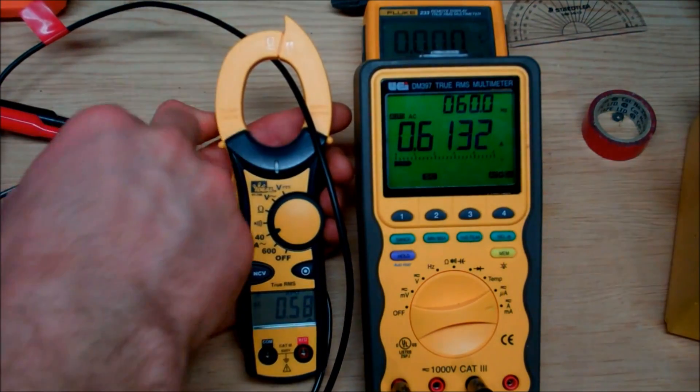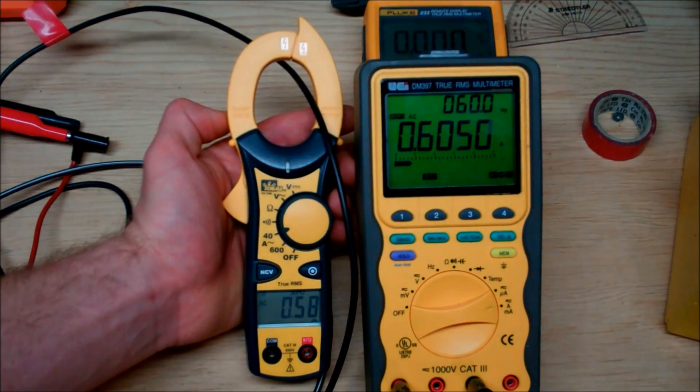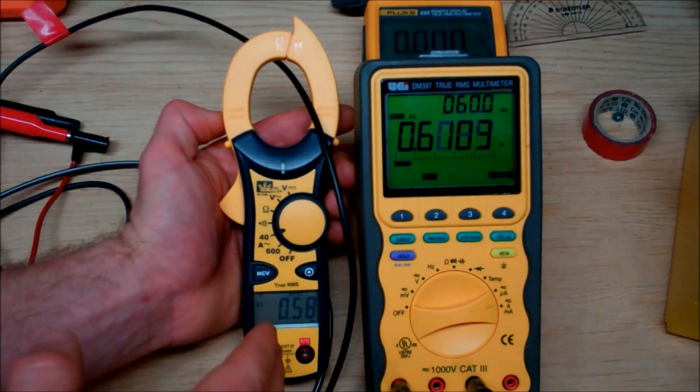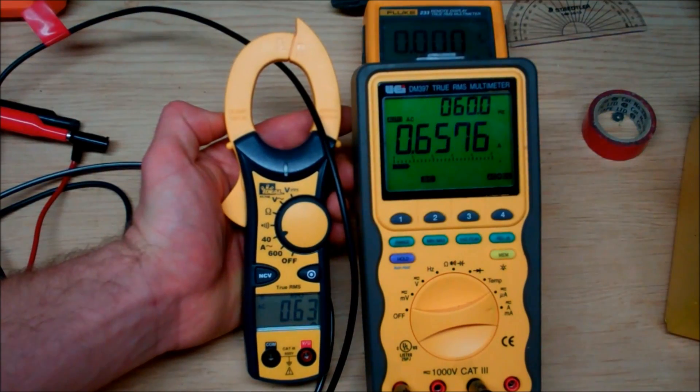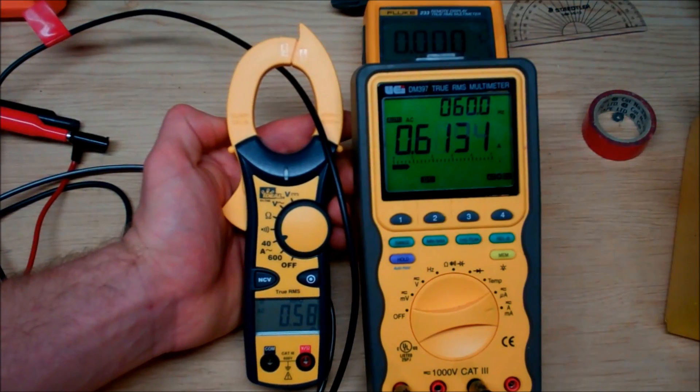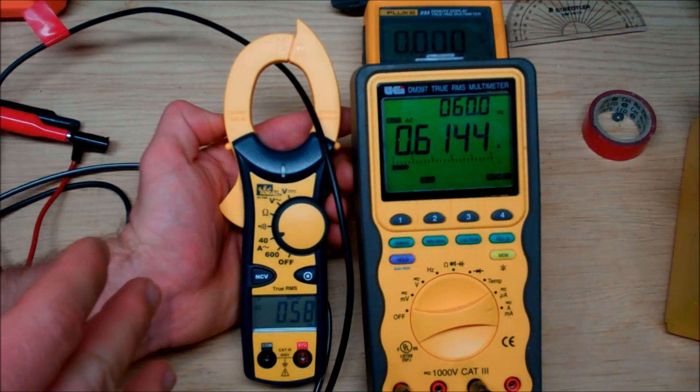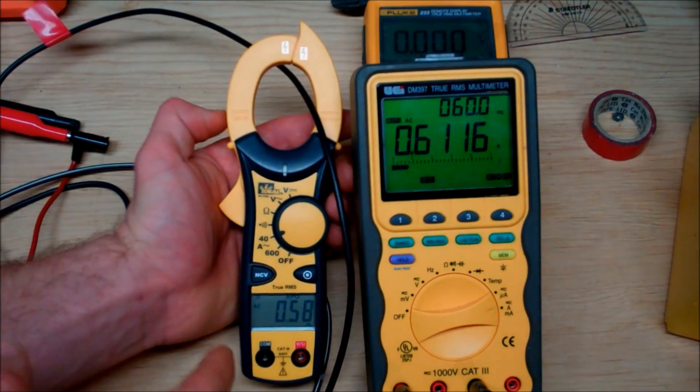Because first off, the major advantage to having a clamp style is you're able to measure massive amounts of current. This thing can measure up to 600 amps, where this unit can only measure up to 10 amps, which is very common for most multimeters of this style. There's some that can measure up to 20, but nowhere near to what this thing can do. 600 amps is definitely something you'll see out in industry, so it's one great benefit to the tool.